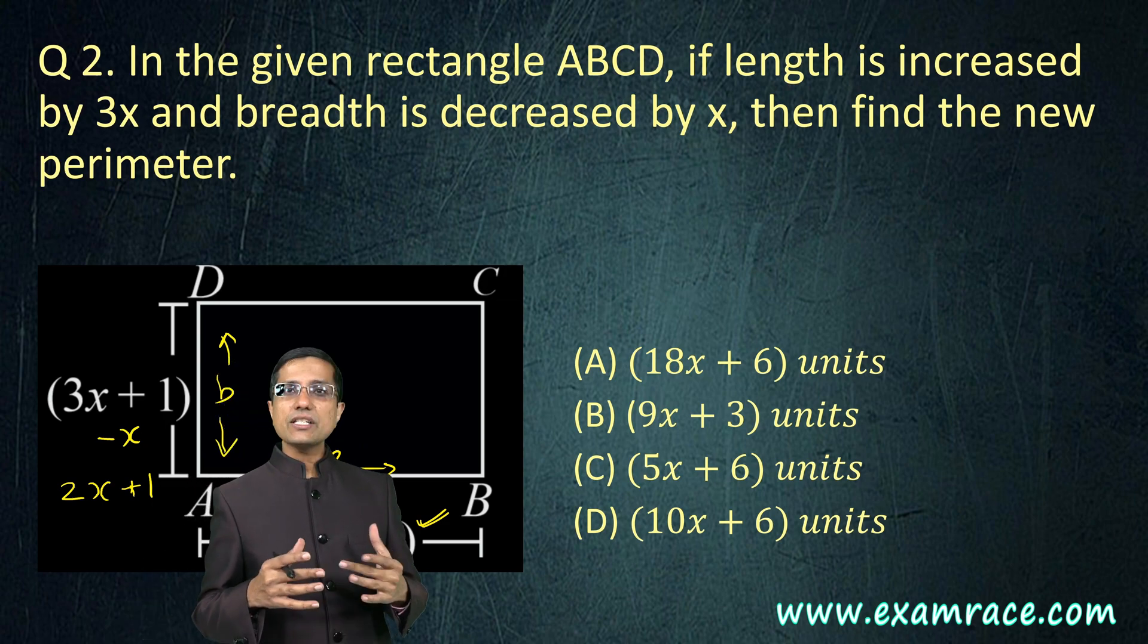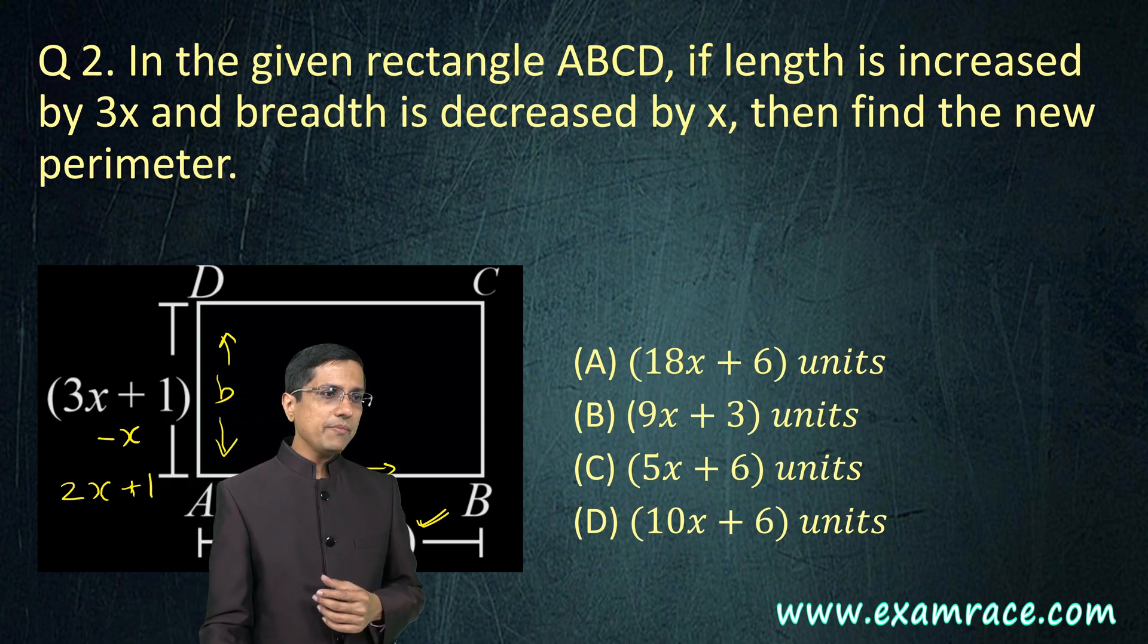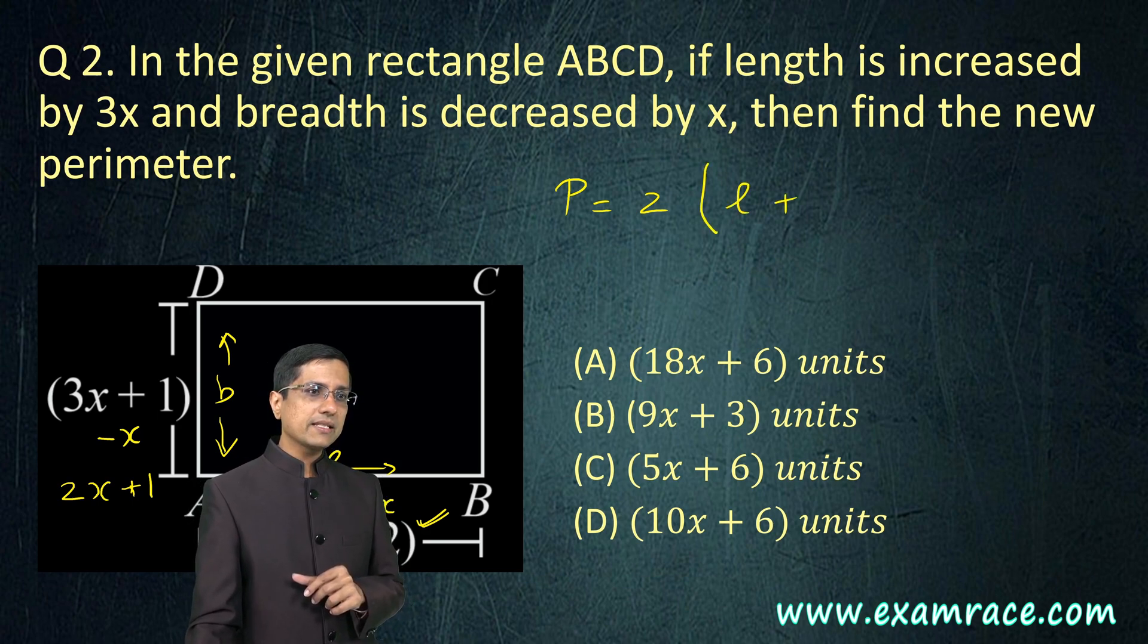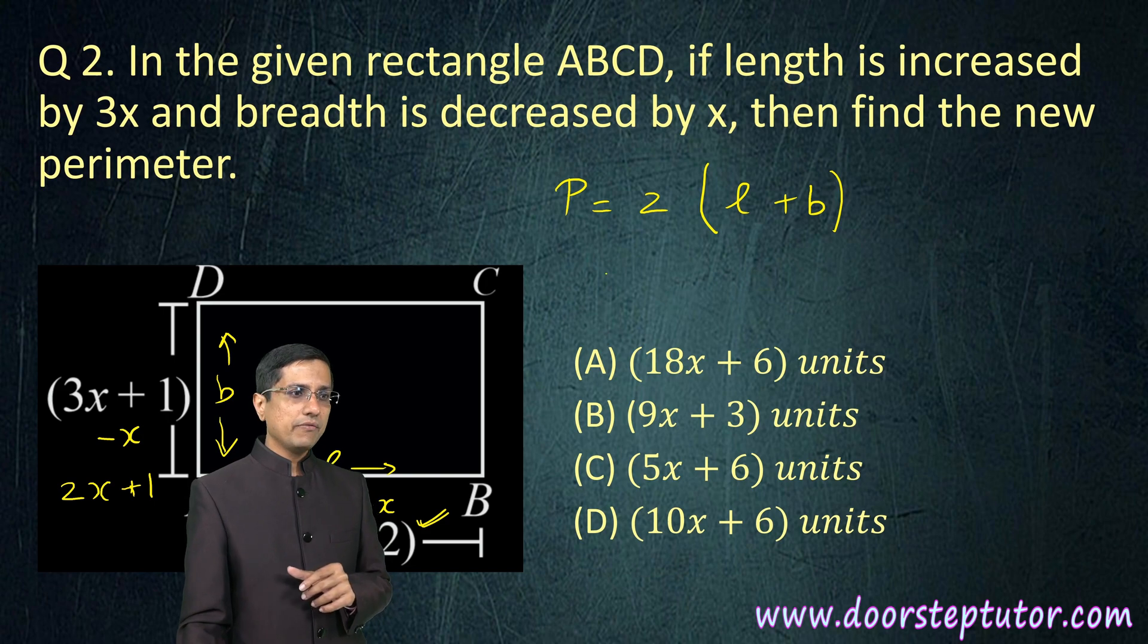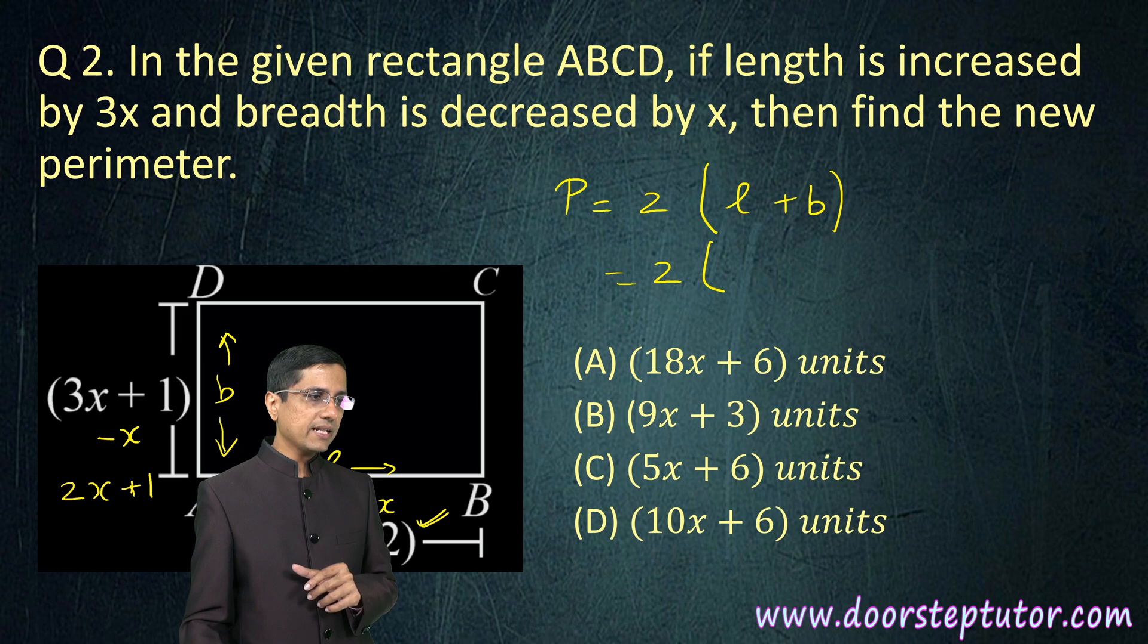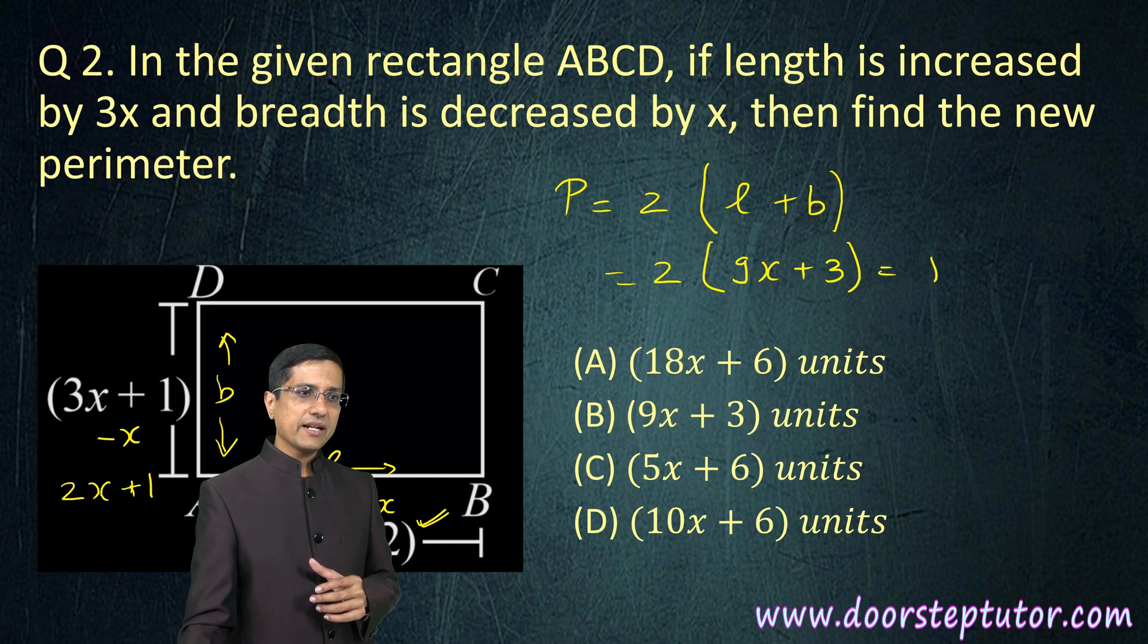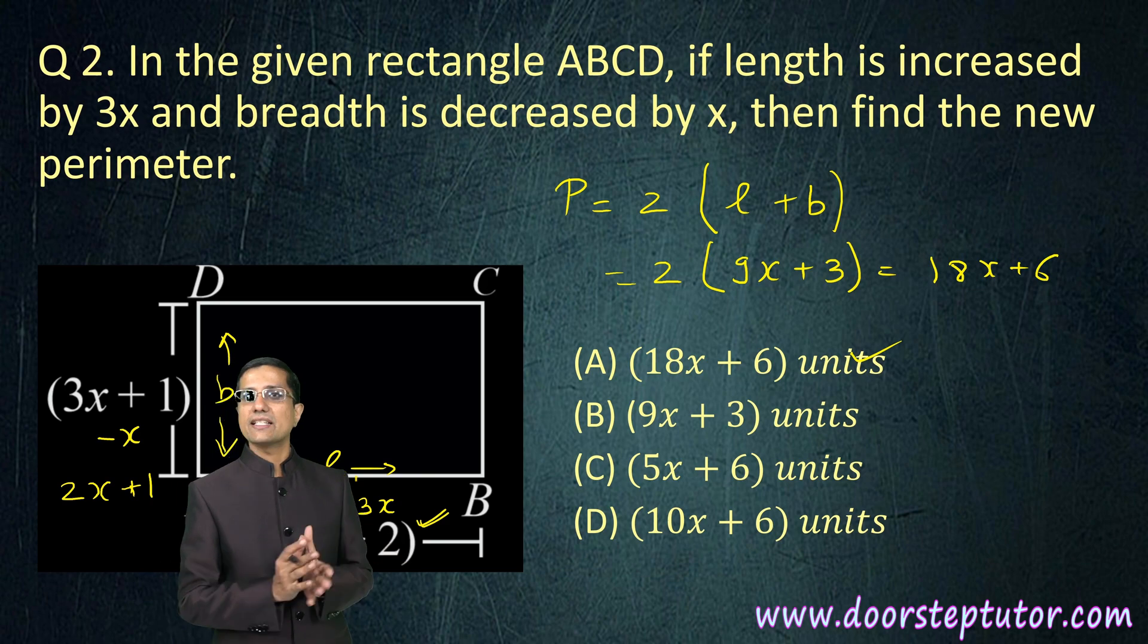Now we are being asked the perimeter. Perimeter of a rectangle is equal to 2 into l plus b, which equals 2 times the new length 7x plus 2 and the new breadth 2x plus 1. 7x plus 2x is 9x, and 2 and 1 is 3. This becomes 2 times 9x plus 3, which is 18x plus 6. The right answer is A.